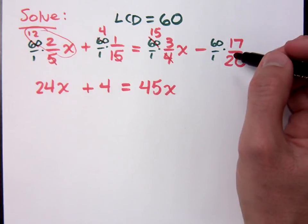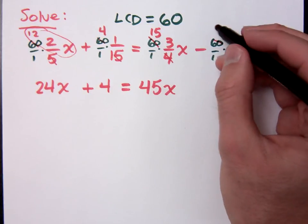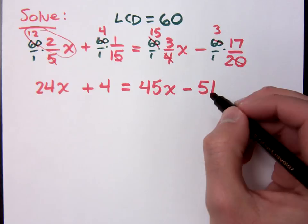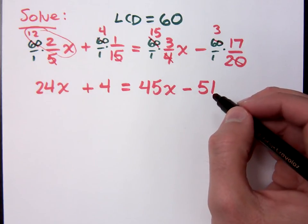Then what? 20 goes into 60 3 times. 20 goes in 3 times, so I get minus 51. Do you all agree? Okay.